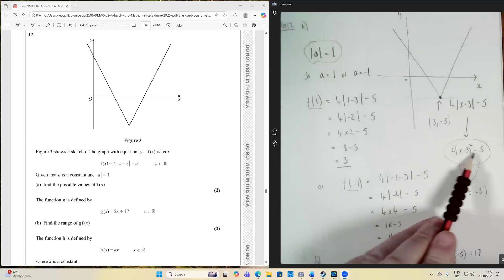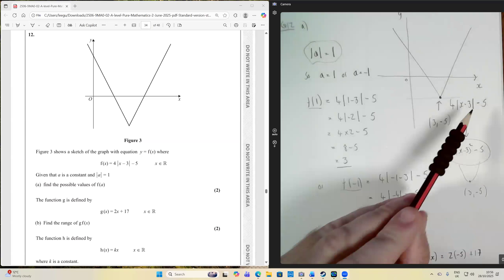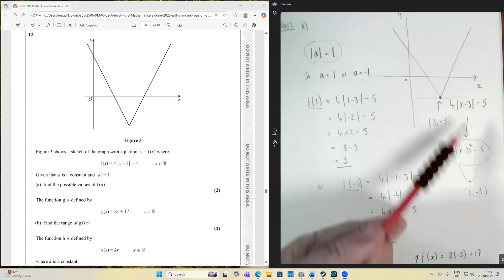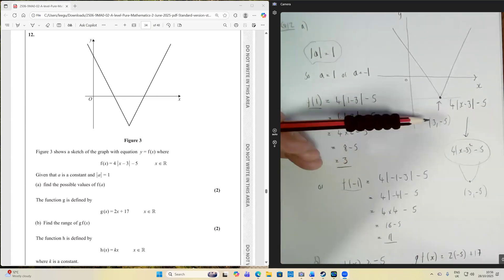If you can think to yourself, imagine it was a quadratic, what would the coordinate of the turning point be? It works the same way here. So we can see that using that logic, the vertex is going to have coordinates 3 minus 5.